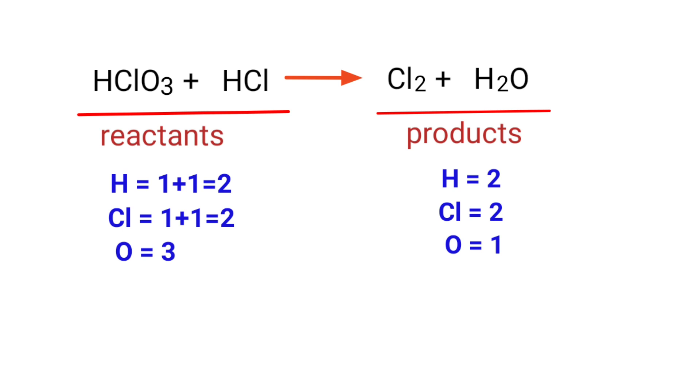In the reactants side, there are 2 Hydrogen Atoms, 2 Chlorine Atoms and 3 Oxygen Atoms present. And in the products side, there are 2 Hydrogen Atoms, 2 Chlorine Atoms and 1 Oxygen Atom present.